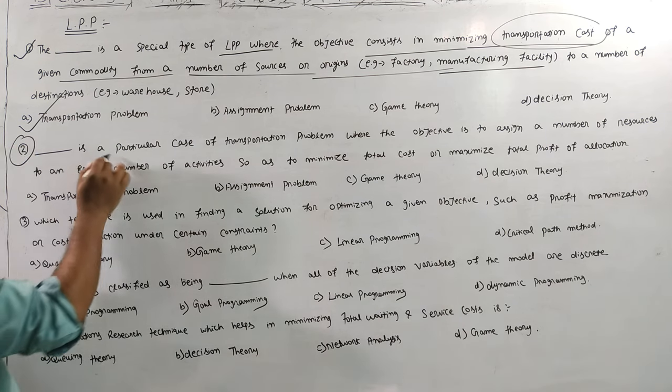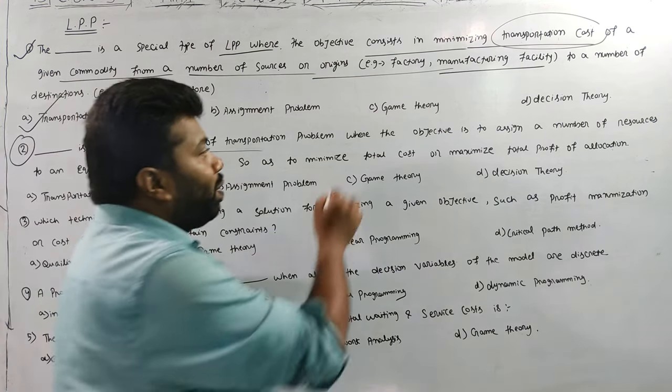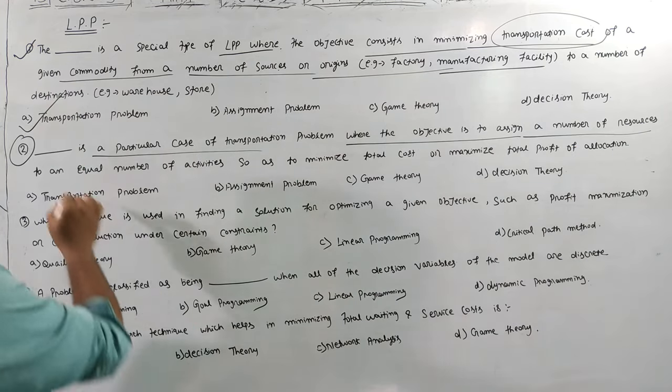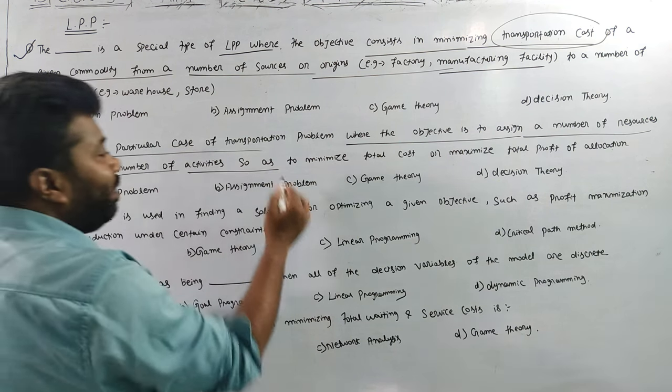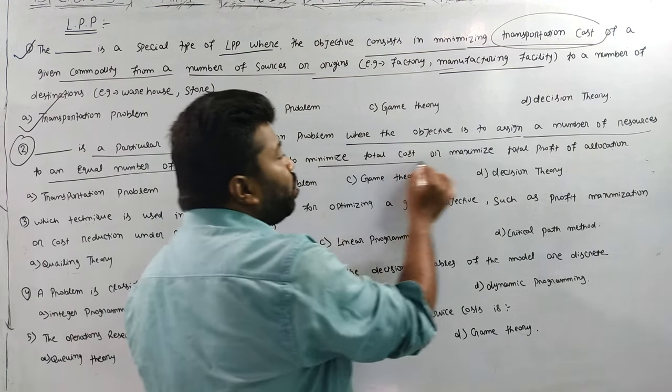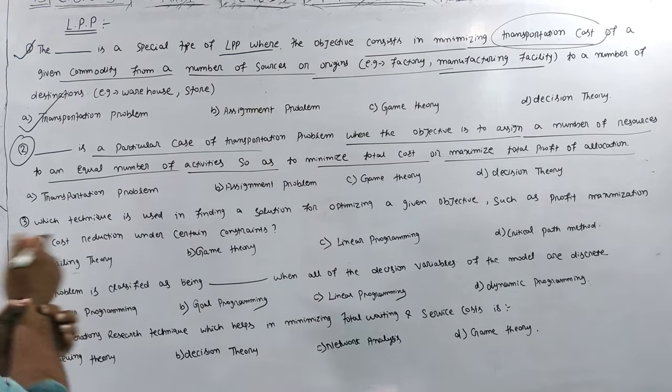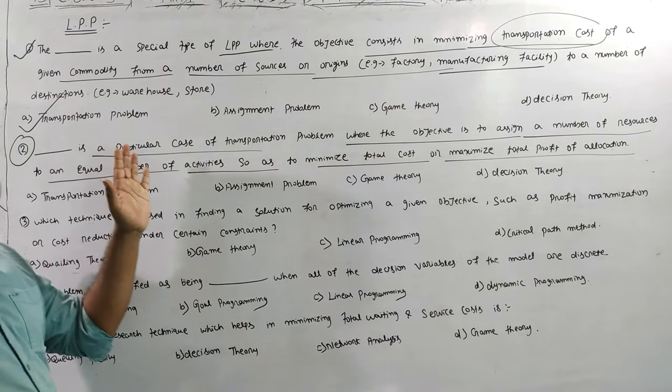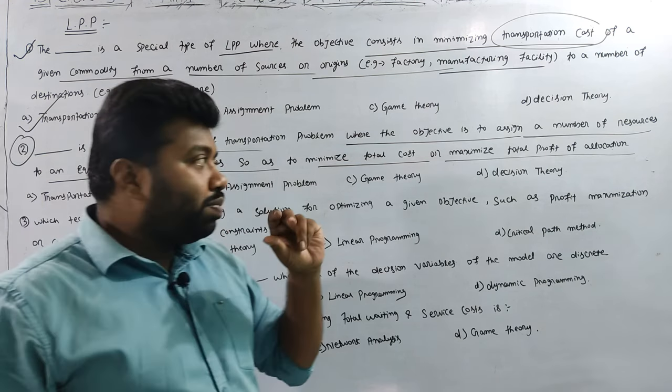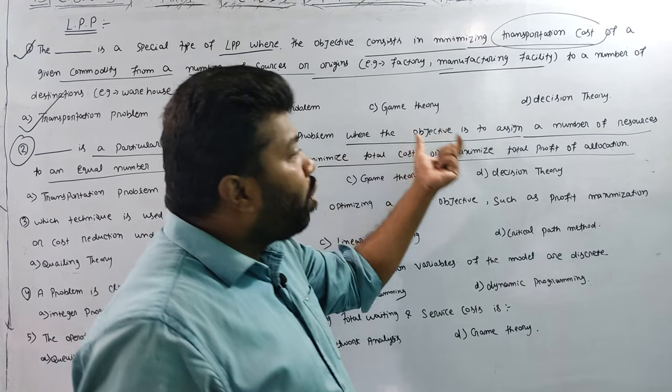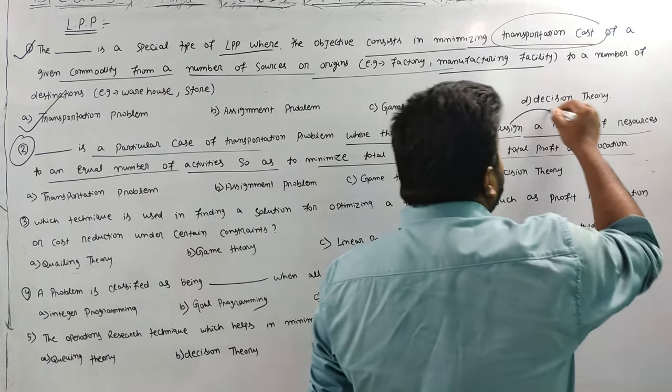Second question: This is the particular case of transportation problem where the objective is to assign number of resources to equal number of activities so that we minimize the total cost or maximize the profit of allocation. This is a particular case of transportation problem where the objective is to be assigned.